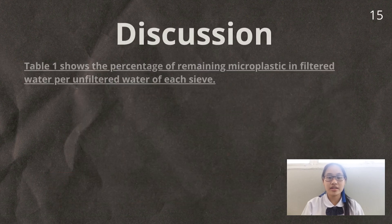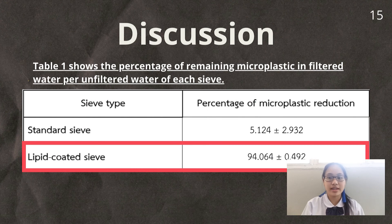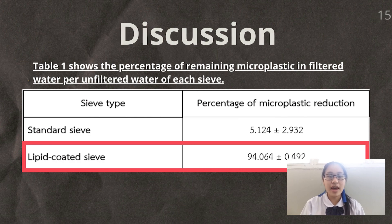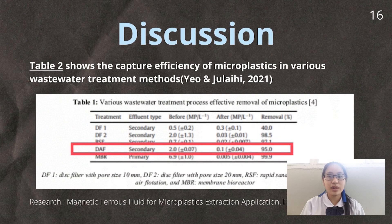The following is the discussion of our experiment results. The percentage of remaining microplastics in filtered water compared to unfiltered water for each sieve is shown in this table. Microplastics can be removed 94.064% using a lipid-coated sieve. This can be compared with magnetic ferrous fluid for microplastic extraction applications. All results were similar to this referenced paper, and the lipid-coated sieve has a similar efficiency to the DAF method, or dissolved air flotation.